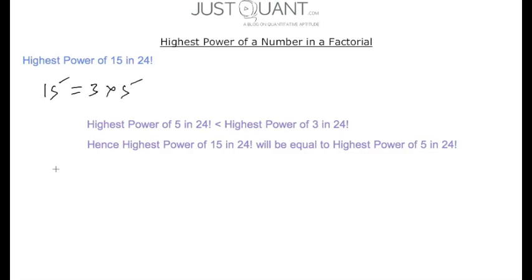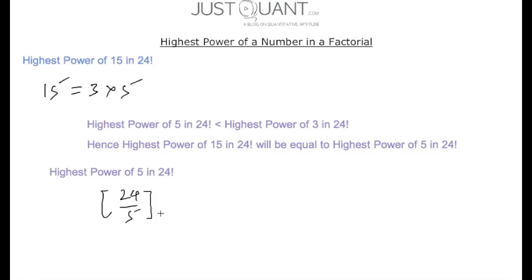The highest power of 5 in 24 factorial is obtained by calculating the greatest integer less than or equal to 24/5, which equals 4. So 4 represents the highest power of 5 in 24 factorial, which in turn represents the highest power of 15 in 24 factorial.